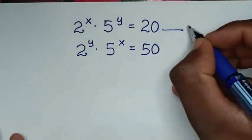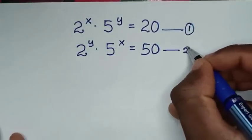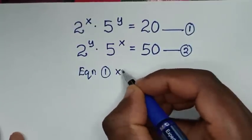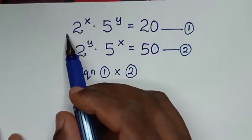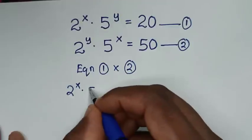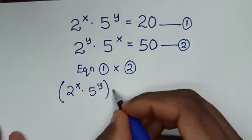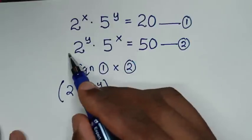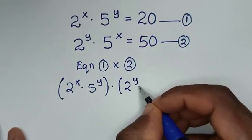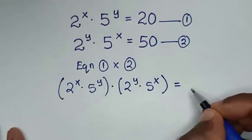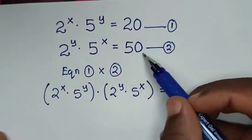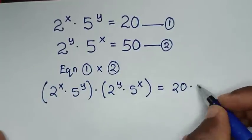We call these equation 1 and equation 2. In the first step, we take equation 1 times equation 2. On the left side: (2 power of x times 5 power of y) times (2 power of y times 5 power of x) is equal to 20 times 50 on the right side.